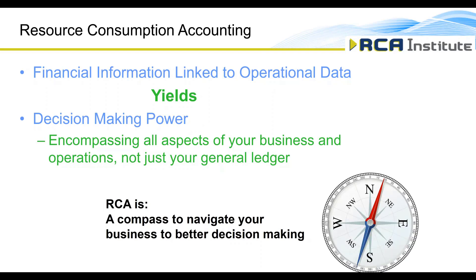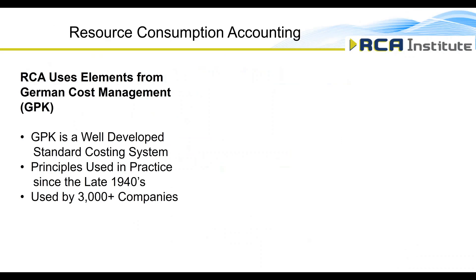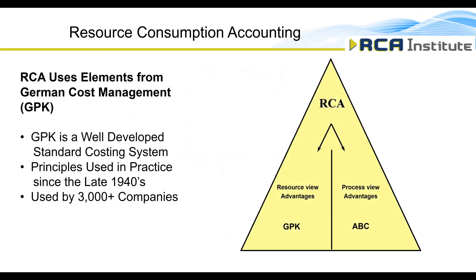RCA provides a compass to navigate your business, enabling more effective, forward-looking decision-making throughout your organization. RCA combines German managerial accounting methods known as Grenzplan Kostenrechnen — which translated directly means flexible cost planning and control, referred to in English as GPK — and a strict form of activity-based costing where detailed process insights are needed.